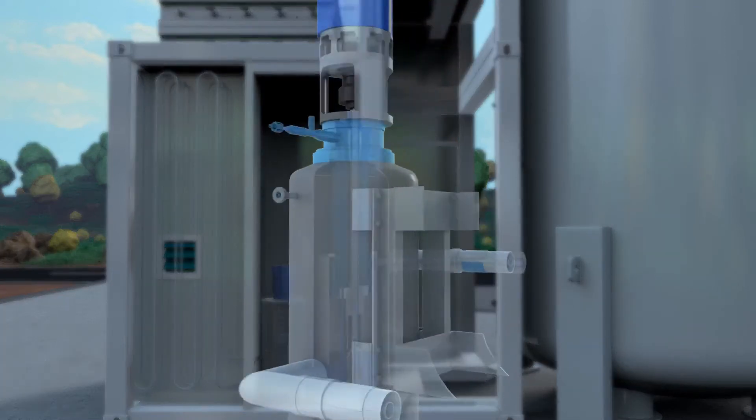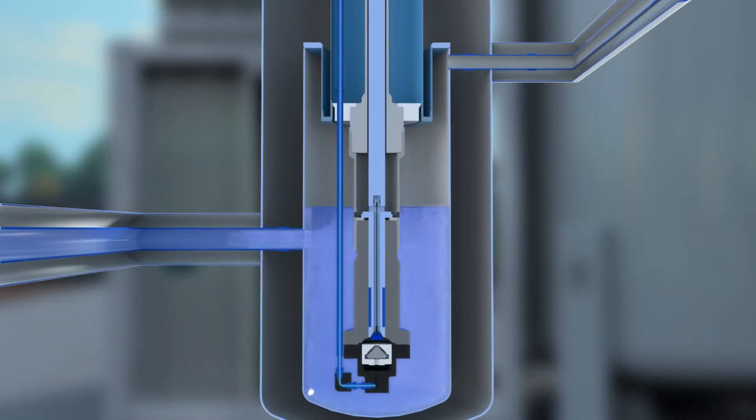Here is how the cryo pump works. From the storage tank, the pump is supplied with liquid hydrogen at minus 253 degrees Celsius.